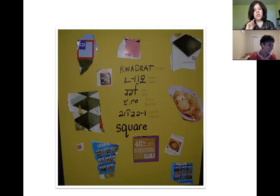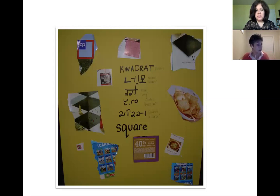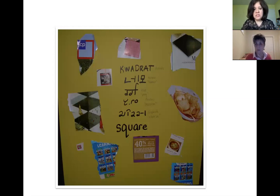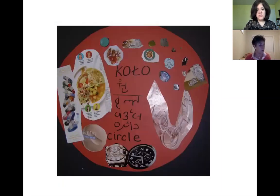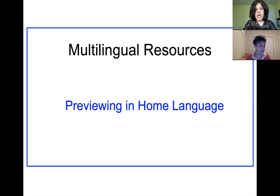This is an example from a younger grade on collecting different ways to say the names of geometric figures in math. Again, children can make these at home — having the model of what are the languages in our classroom. So this shows 'rectangle' and different ways of saying 'circle' with examples of circles, and students can make their own posters at home.